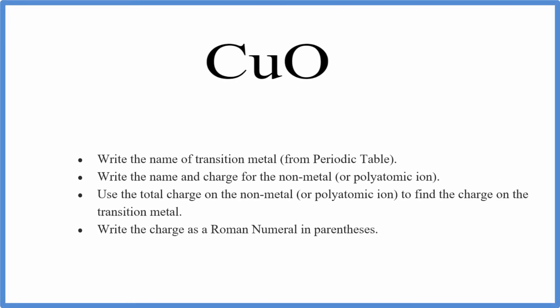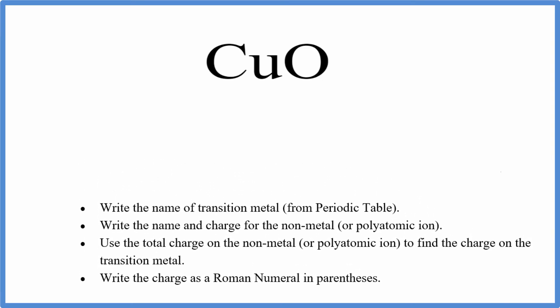To write the name for CuO, that's copper II oxide, we'll use the periodic table and a few simple rules. So we go to the periodic table. We know copper is a metal, oxygen is a non-metal. It's going to be an ionic compound.